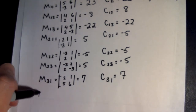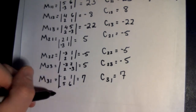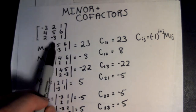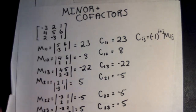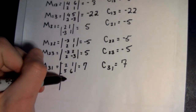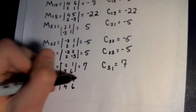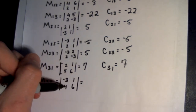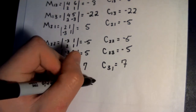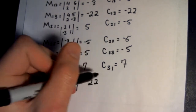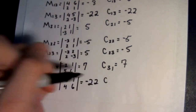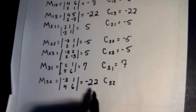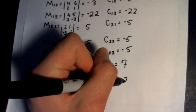Now we look at M32. We get rid of the third row and second column, giving us negative 3, 1, 4, 6. That's going to be negative 18 minus 4, which is negative 22. For the cofactor C32, 3 plus 2 is 5, so that's negative 1 times negative 22, which is equal to 22.